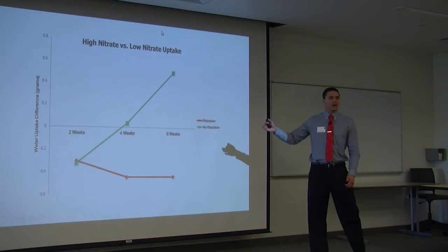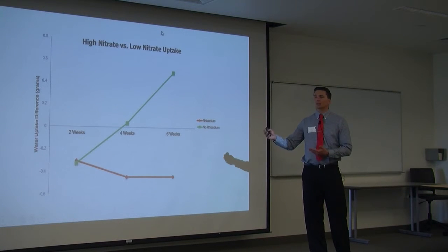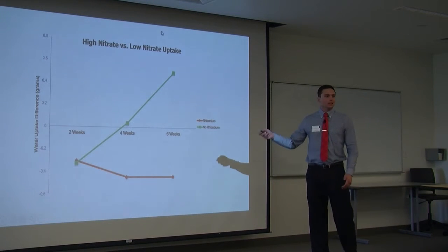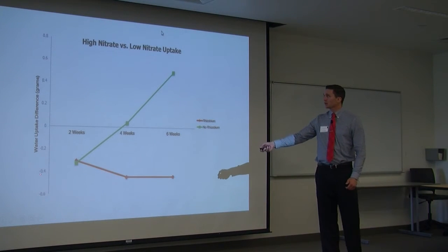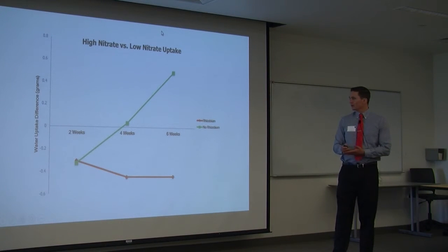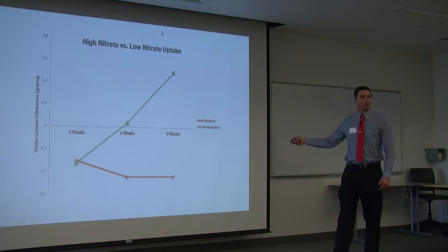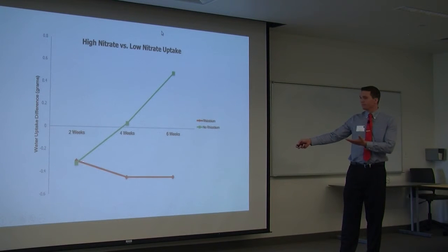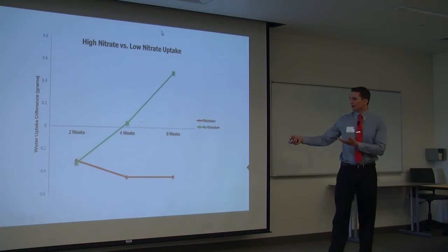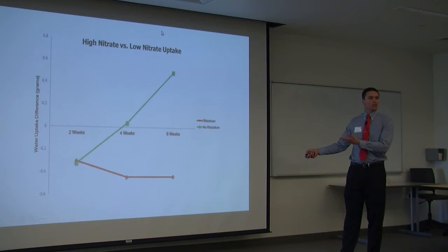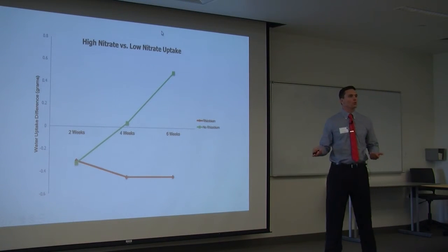This graph shows the high nitrate solution uptake minus the low nitrate solution uptake. On the y-axis, you see the water uptake difference, and the negative value is because they took up more of the low nitrate solution than the high. Both the rhizobium in red and the non-rhizobium in green started at about the same amount. At the 4-week period, there was no preference in the non-rhizobium, but the rhizobium plant took up more of the low nitrate solution. In the 6-week period, the rhizobium continued to take up more of the low nitrate solution, while the non-rhizobium took up substantially more of the high nitrate solution.